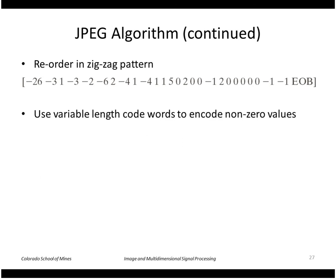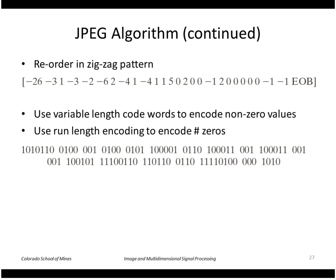Now we'll use variable length code words to encode the non-zero values. More common values we use small code words, and values that are not so common we can use long code words. And finally, use run length encoding to encode the number of zeros. So this minus 26 is encoded using this code word, a minus 3 is using this code word, a 1 is using this one, and so forth. In this example, the total number of bits is 92. We started with 512 bits in that 8 by 8 image, so we get a compression ratio of 5.6 to 1.